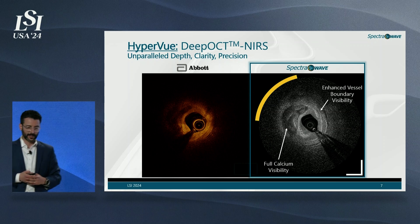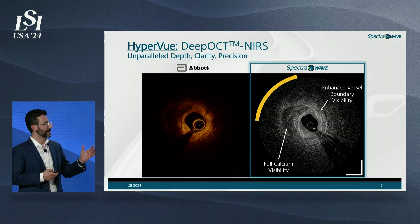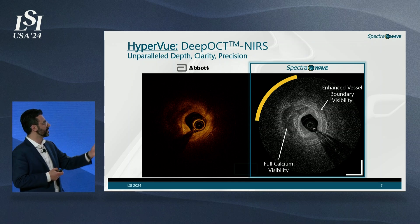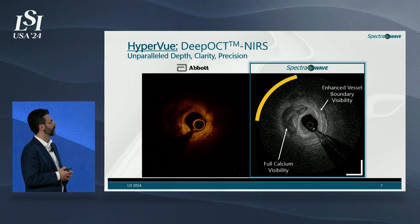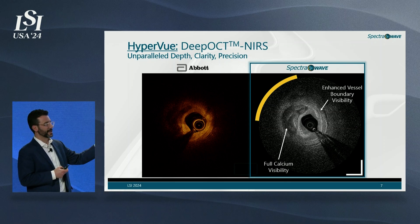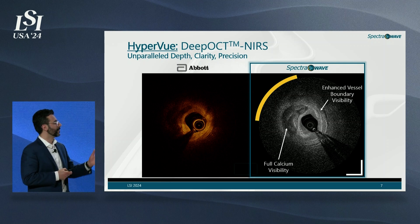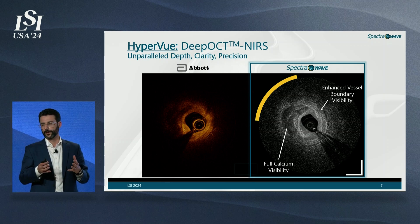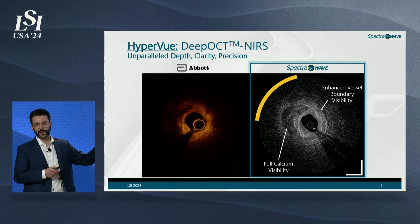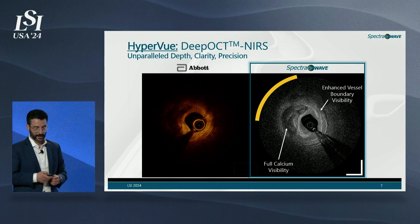Head-to-head competitive comparisons demonstrate the leap in image quality we've achieved. Our image shown on the right clearly reveals the plaque and the back wall of the plaque — critical for vessel modification prior to stenting — as well as the vessel boundary, important for determining native lumen dimensions. Additionally, a yellow arc represents validated and quantified lipid content within the vessel wall.